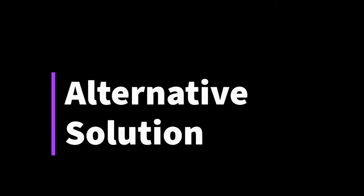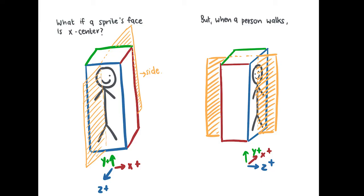Now let's talk about the alternative solution. One person told me that we can set the person node's Y axis rotation to negative 90 and then set the texture node to have a texture face of X center — and actually, it works.